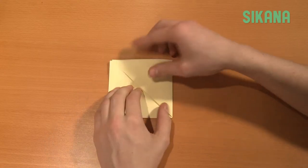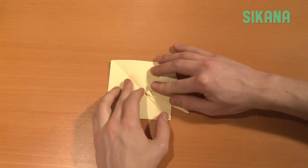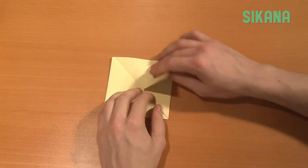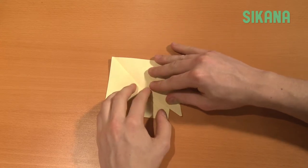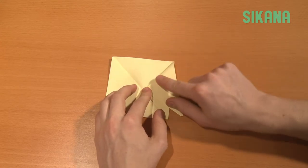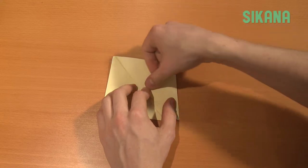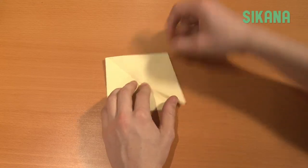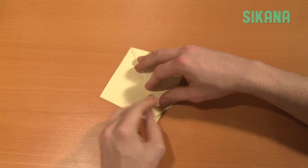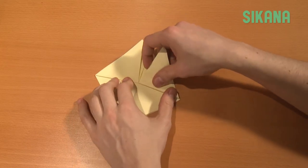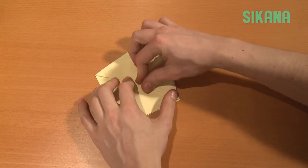Fold this part down this way to leave a little space here. Repeat exactly for the other side. Everything must be symmetrical.